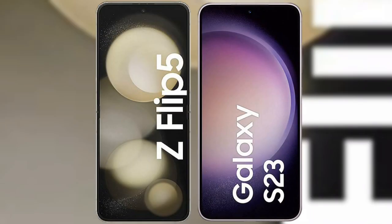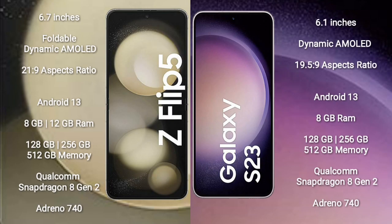I will compare the new Samsung Galaxy Z Flip 5 with Samsung Galaxy S23. The Z Flip 5 comes with a 6.7-inch foldable dynamic AMOLED display with an aspect ratio of 21:9. The Samsung Galaxy S23 comes with a 6.1-inch dynamic AMOLED display with an aspect ratio of 19.5:9.